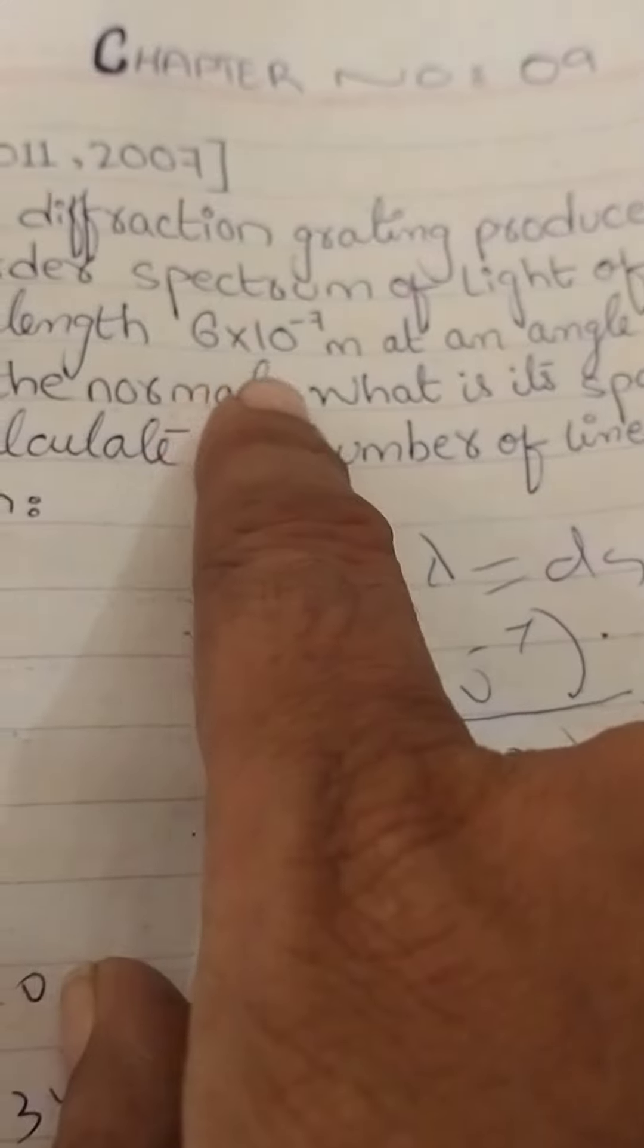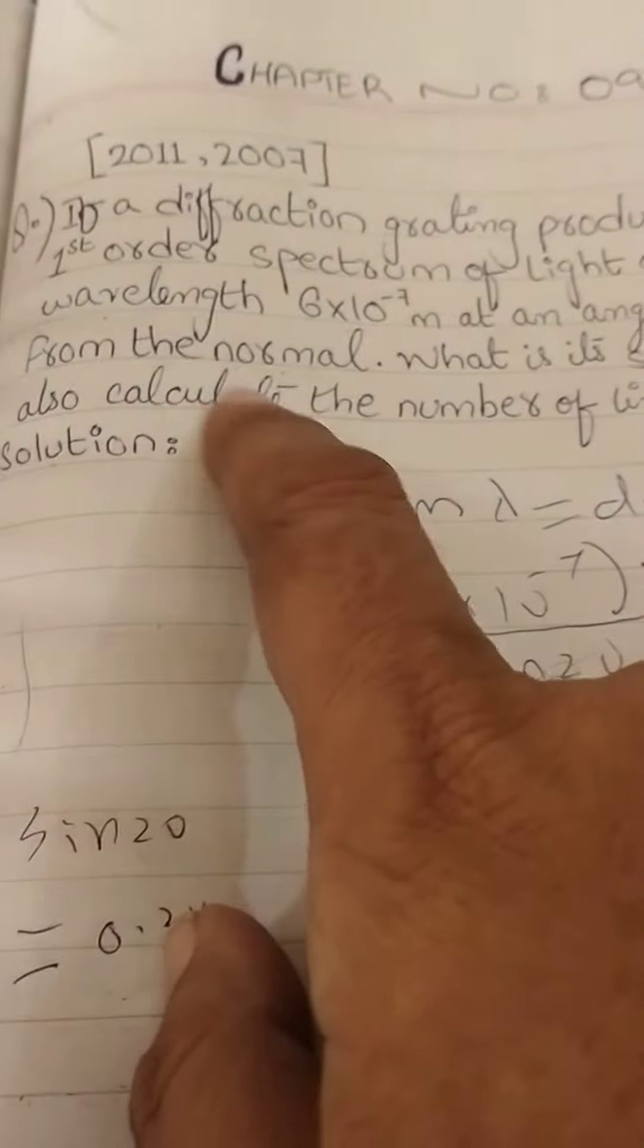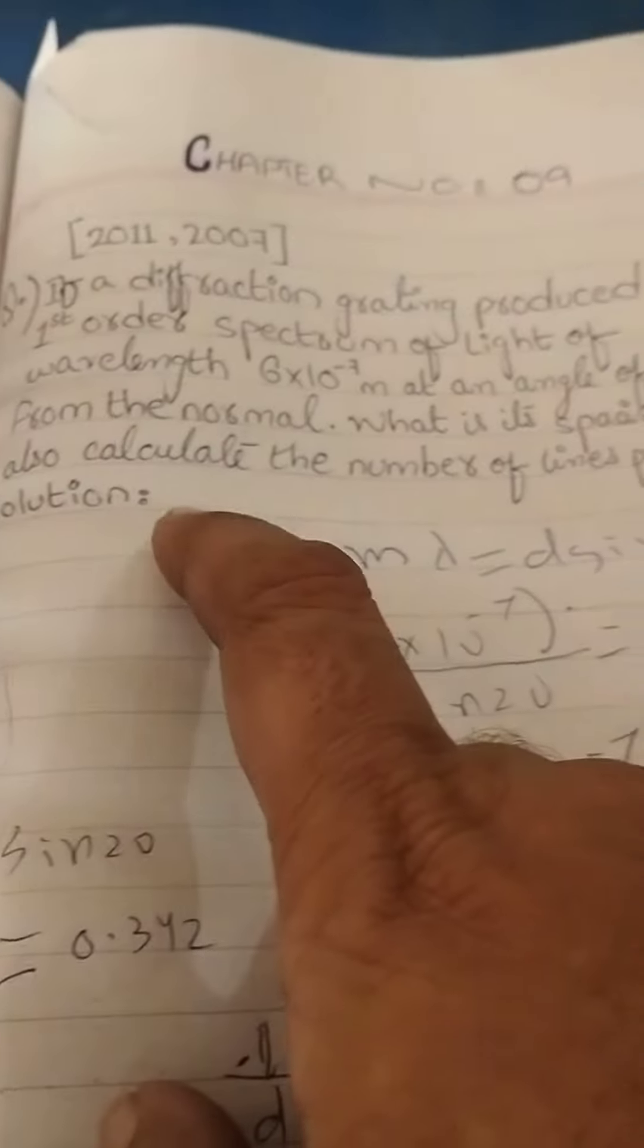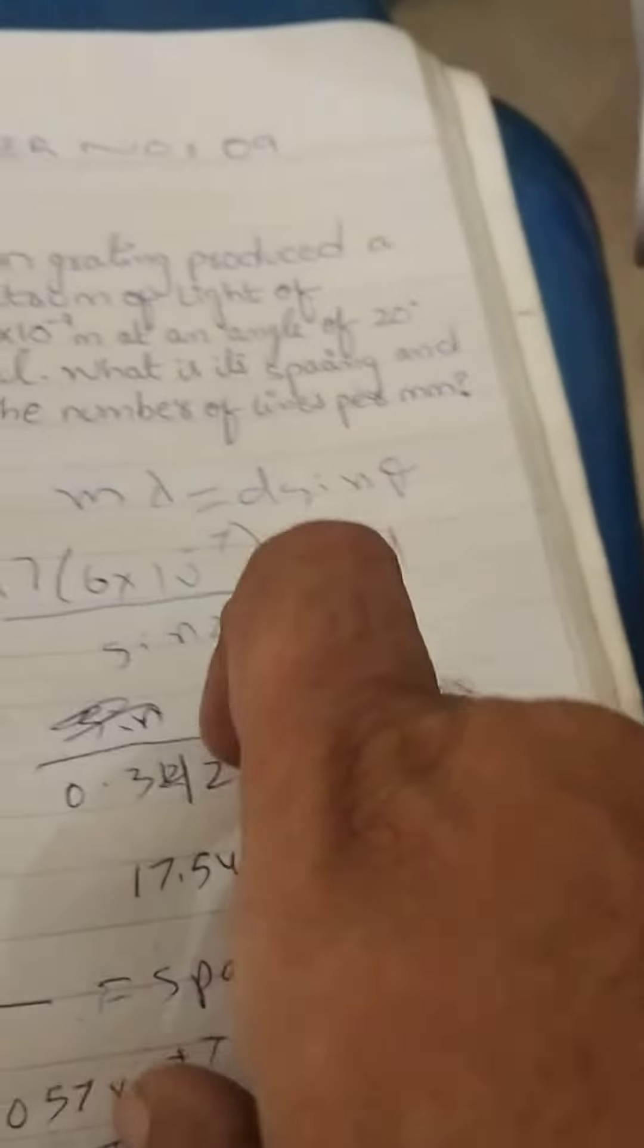If a diffraction grating produces a first order spectrum line of wavelength 6 × 10^-7 meter at an angle of 20 degrees from the normal, what is the spacing and also calculate the number of lines per millimeter.